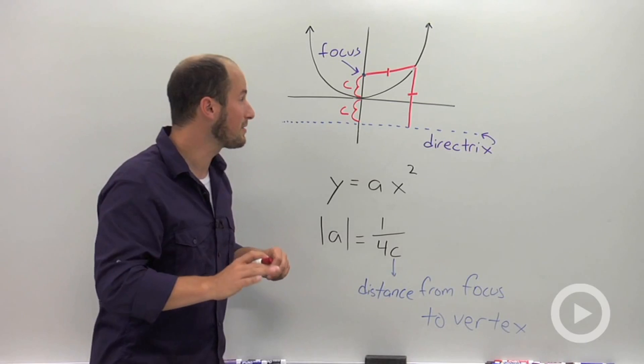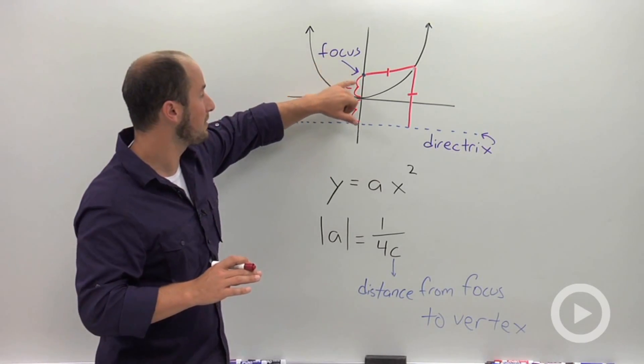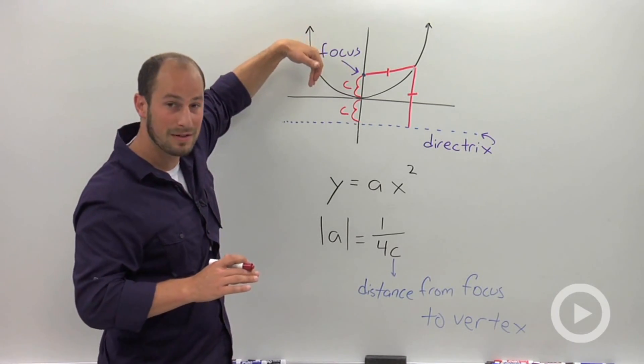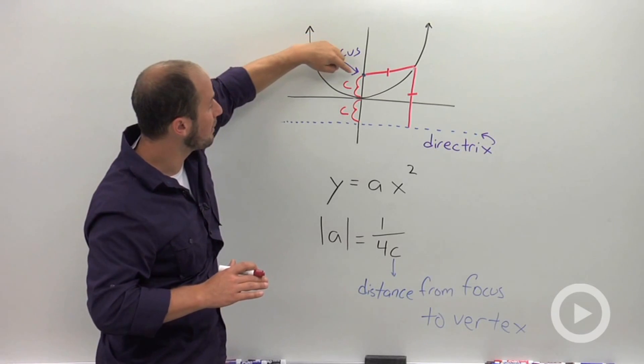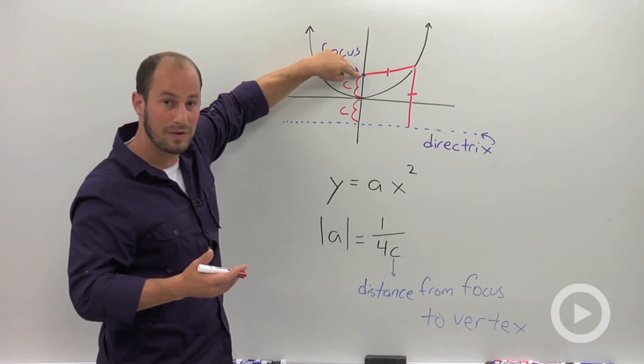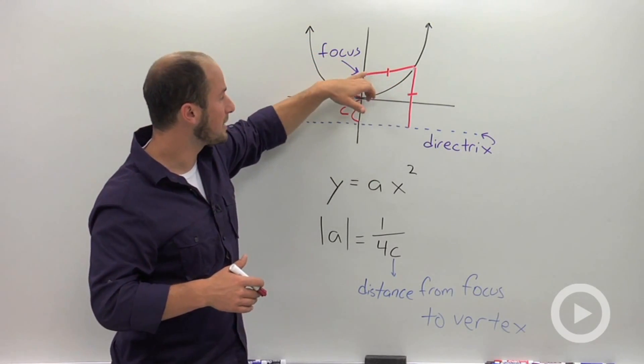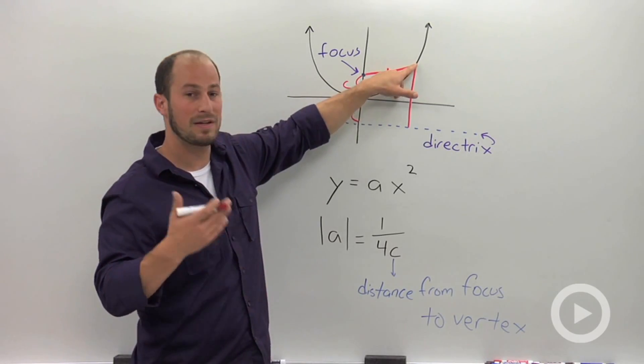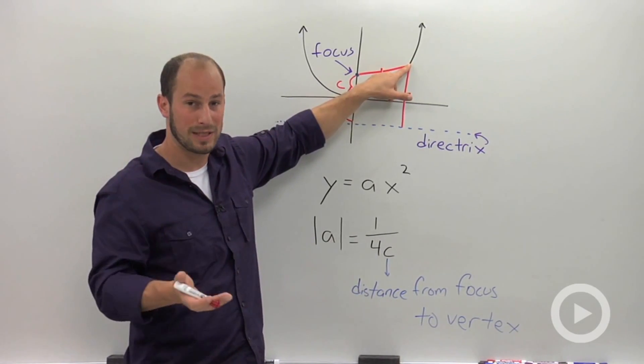So the main thing from this little talk is the focus. There's a point where everything, if you're creating lines that are coming straight in, are going to be deflected into this focus. And the relationship between the focus and directrix is any point on the curve is going to be equidistant between the two.